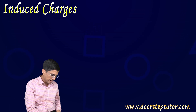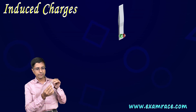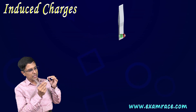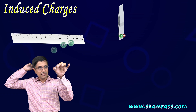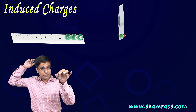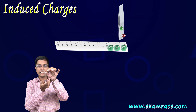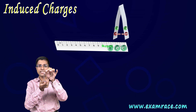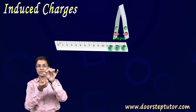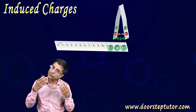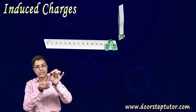Here is another simple experiment to demonstrate this induction of charges. This is just a very thin piece of aluminium foil. I rub the scale again and bring it close to the foil — notice what is happening: it is expanding. As I bring the scale close to this piece of foil, these two leaves of foil move away from each other. This is happening systematically.